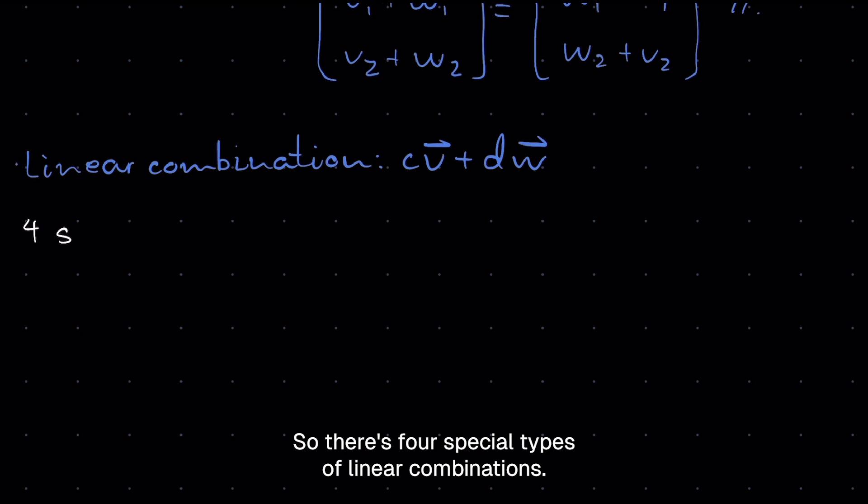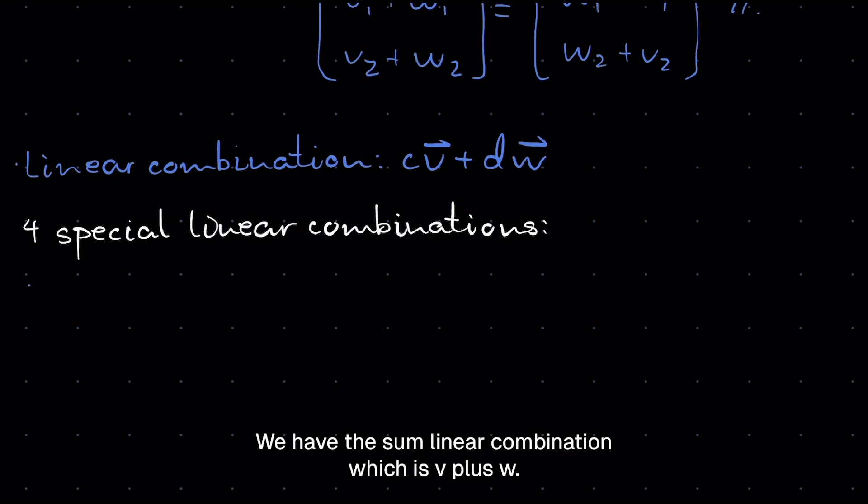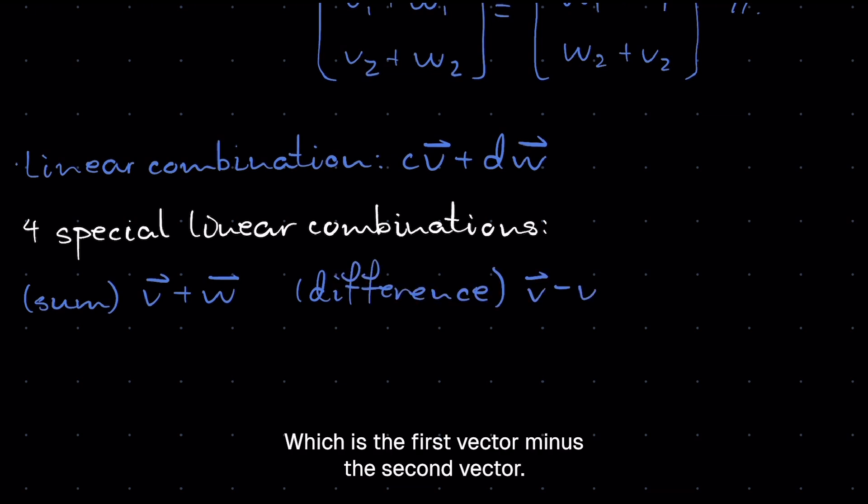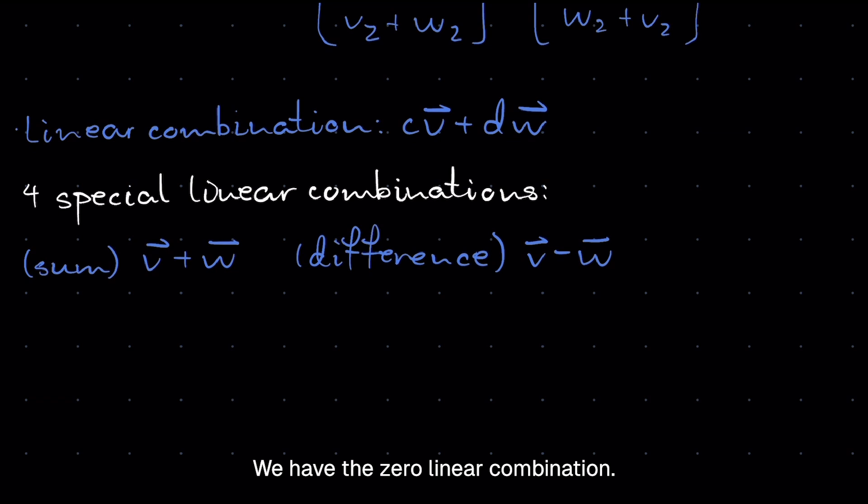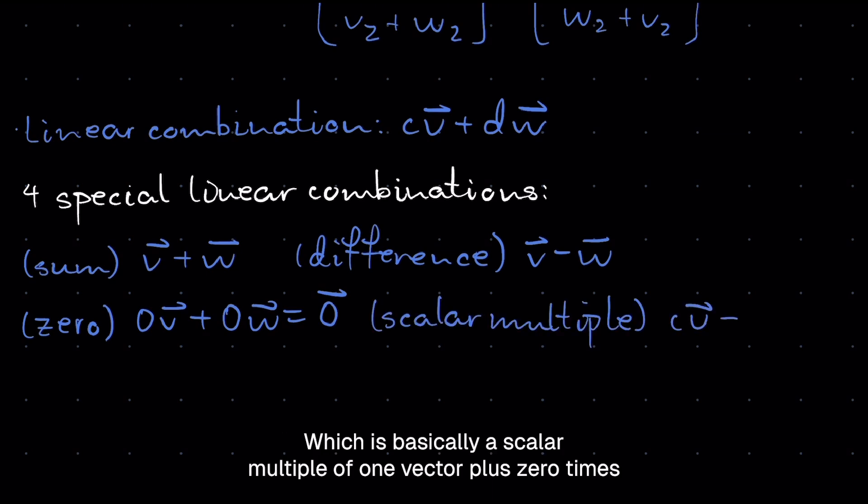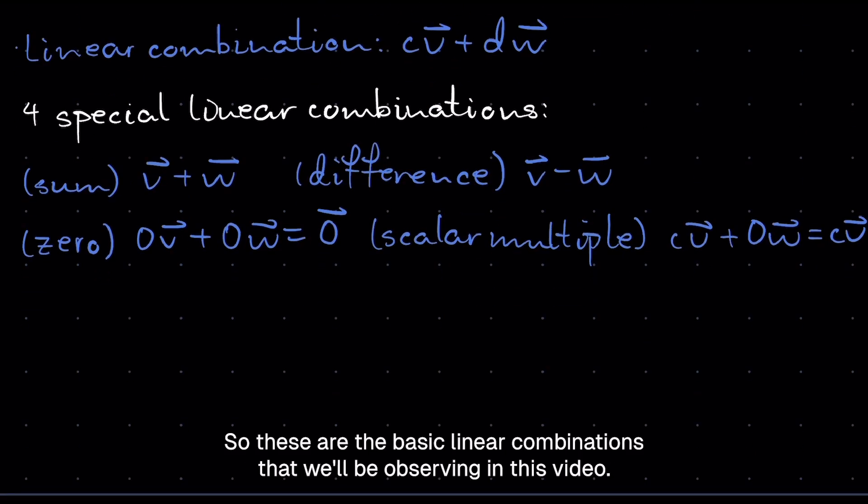So there's four special types of linear combinations. We have the sum linear combination, which is V plus W. It's basically a linear combination with C and D equal to 1. We have the difference linear combination, which is the first vector minus the second vector. We have the zero linear combination, which is zero times V plus zero times W, which always yields the zero vector. And we write the zero vector as a zero with an arrow on top. And last of all, we have a scalar multiple linear combination, which is basically a scalar multiple of one vector plus zero times another vector, which simply yields CV. So these are the basic linear combinations that we'll be observing in this video.